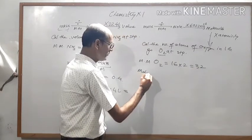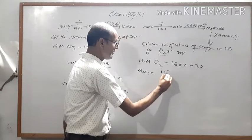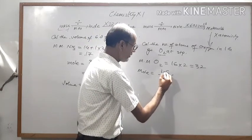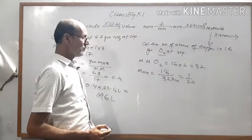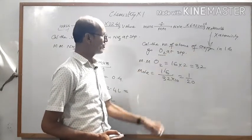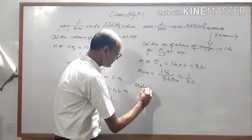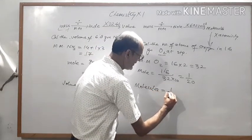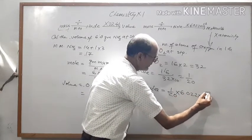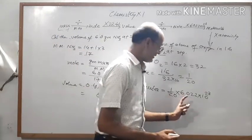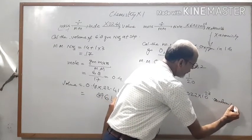So moles equals mass divided by molecular mass: 1.6 gram divided by 32, which equals 1 by 20. Then it will be multiplied by Avogadro's number, that is 6.022 into 10 to the power 23, and you will get the molecules. So molecules equals 1 by 20 into 6.022 into 10 to the power 23 — this is the number of molecules of O2.